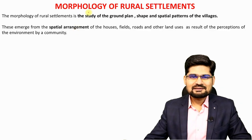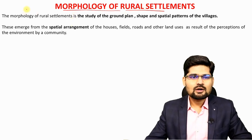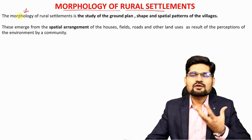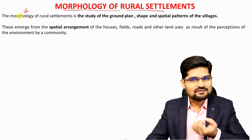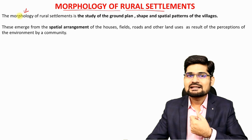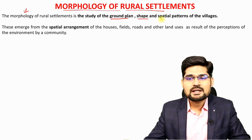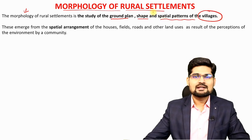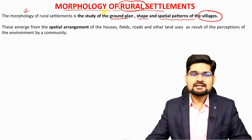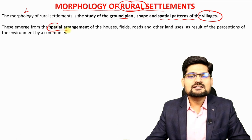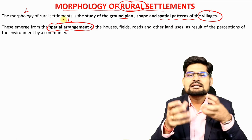Now let's learn about the morphology of rural settlements. Whenever we say morphology — for example, geomorphology — we learn about the various shapes and patterns on the surface of the earth. So what is the morphology of rural settlements? It talks about the ground plan, the shape — because 'morph' means shape — and the spatial patterns of various villages. These emerge from the spatial arrangement of houses, fields, roads, and other land uses in rural areas.